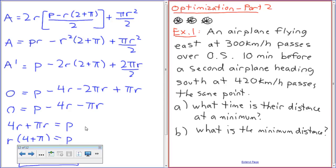Let me read it so it makes sense. An airplane flying east at 300 km/h passes over a point. Ten minutes before a second airplane heading south at 420 km/h passes the same point. Which means that one's heading this way and then 10 minutes later another one passes the same point, heading this way. A. At what time is their distance at a minimum? B. What is the minimum distance?